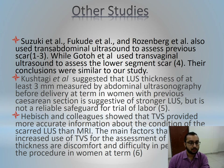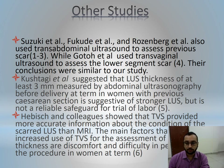Kushtaki et al. suggested that lower uterine segment thickness of at least 3 mm measured by abdominal ultrasonography before delivery in women with previous C-section is suggestive of a stronger lower uterine segment, but is not a reliable safeguard for trial of labor. Abishka and colleagues showed that transvaginal sonography provided more accurate information about the condition of the scarred lower uterine segment than MRI. The main factors limiting increased use of transvaginal sonography are discomfort and difficulty in performing the procedure in women at term.